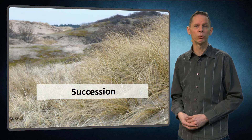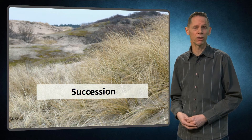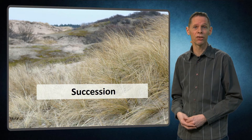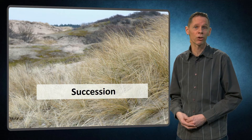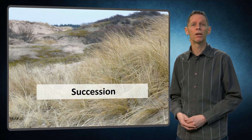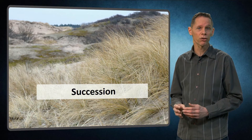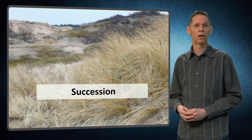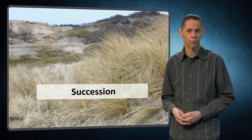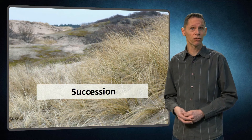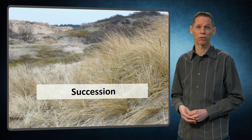Ecosystems form and evolve through succession. Succession refers to the sequence of, mostly, plant species that succeed each other as the ecosystem matures in situations where external conditions stay more or less the same. Ecological succession is started by pioneer species — these are species that are the first to colonize an area and can generally survive harsh conditions. The grasses that colonize beach areas to set off dune formation are good examples of pioneer species.